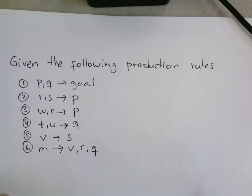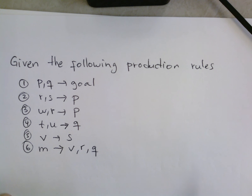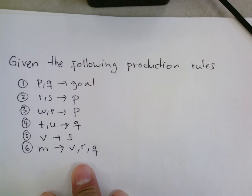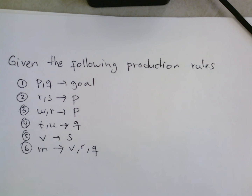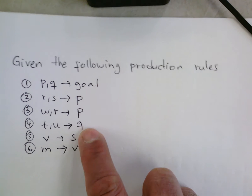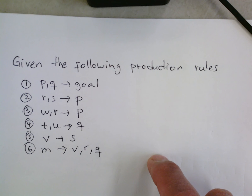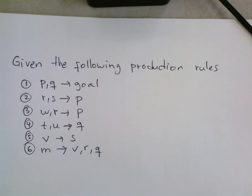In this video we will go over some of the questions in the review exercises for exam number one. One of the questions asks us to trace the execution of a production system, showing each one of the iterations. The question asks us to show the iterations we would see in data-driven search.